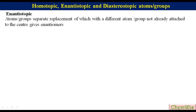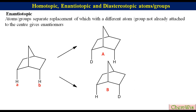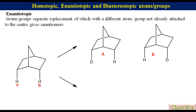Similarly, if we have to determine the relation between these two protons in norbornane, label them as A and B. Replace HA with deuterium to get structure A and replace HB with deuterium to get structure B. If we put structure B like this, we can see that these are non-superimposable mirror images of each other and thus enantiomers. So HA and HB are enantiotopic.